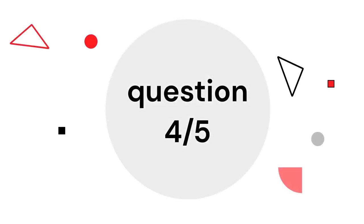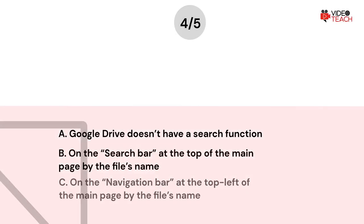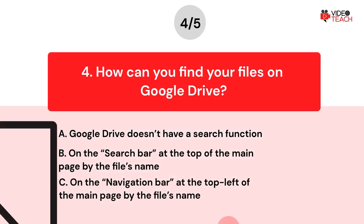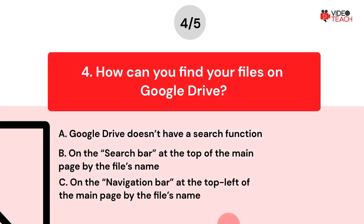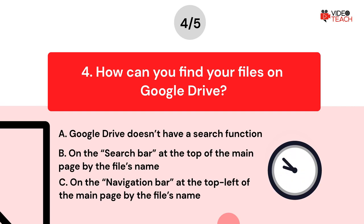Question number four. How can you find your files on Google Drive? Option A: Google Drive doesn't have a search function. Option B: on the search bar at the top of the main page by the file's name. Option C: on the navigation bar at the top left of the main page by the file's name. Now you have about 15 seconds to think about your answer.